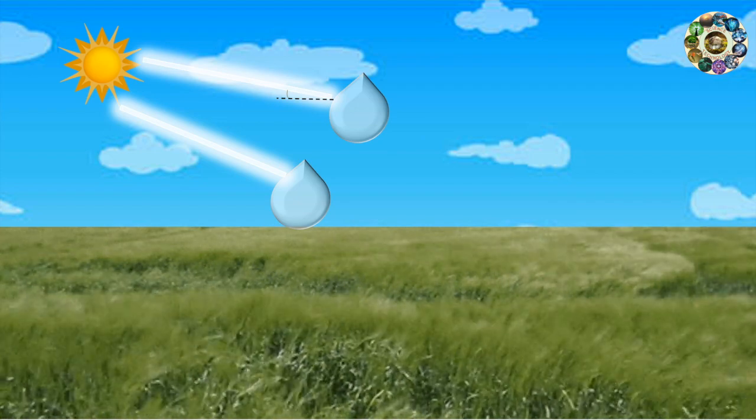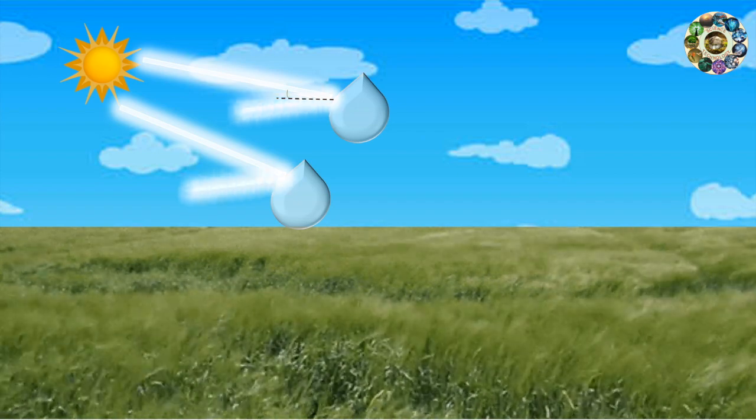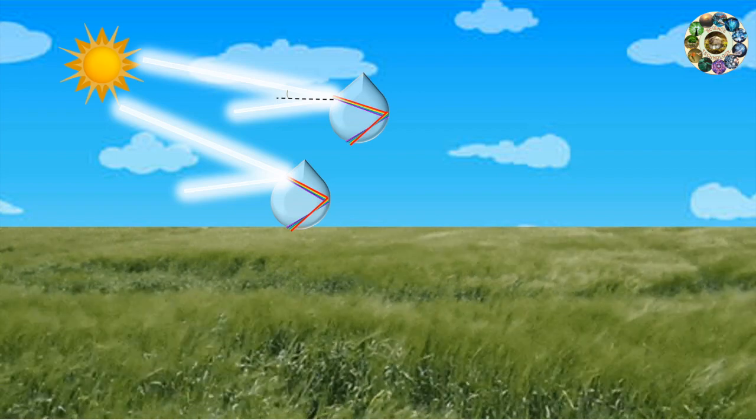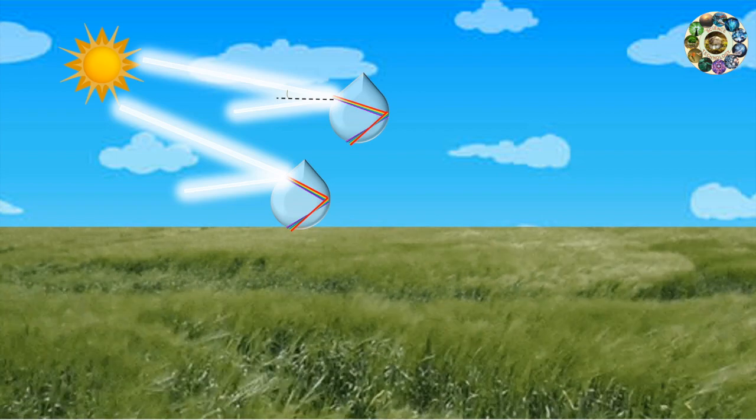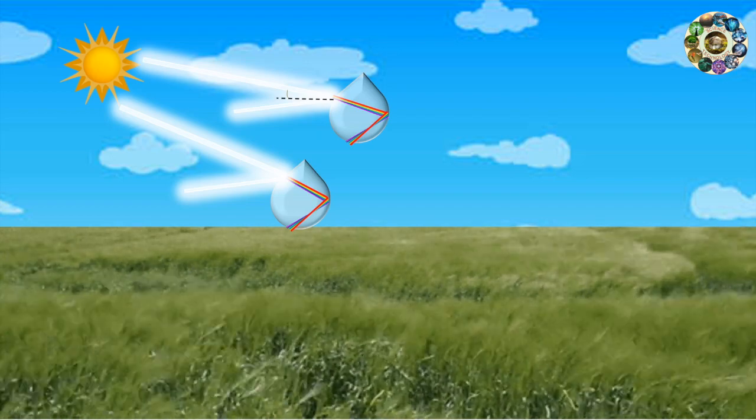During the interaction of light with water droplet, some portion of light is reflected back. The other portion of light enters the drop and slows down because water is denser than air. The reduction of speed causes light to get bent. That's why rainbow is always curved towards the normal line.